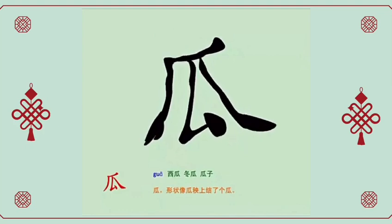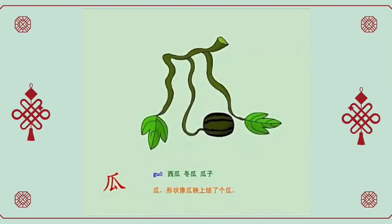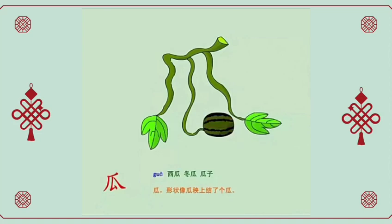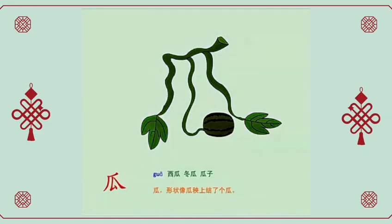瓜, melon or watermelon. The character is shaped like a melon growing on a melon plant. 西瓜, watermelon. 冬瓜, white gourd. 瓜子, sunflower seeds.